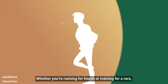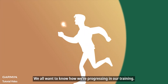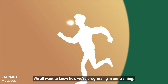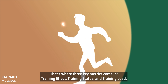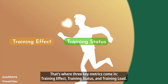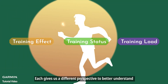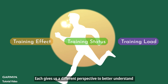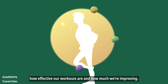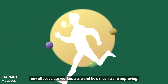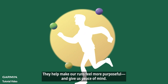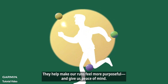Whether you're running for health or training for a race, we all want to know how we're progressing in our training. That's where three key metrics come in: training effect, training status, and training load. Each gives us a different perspective to better understand how effective our workouts are and how much we're improving. They help make our runs feel more purposeful and give us peace of mind.